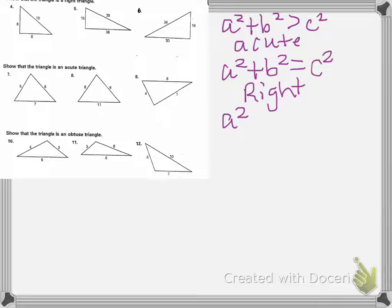And if we have A squared plus B squared is less than C squared, then it is obtuse.